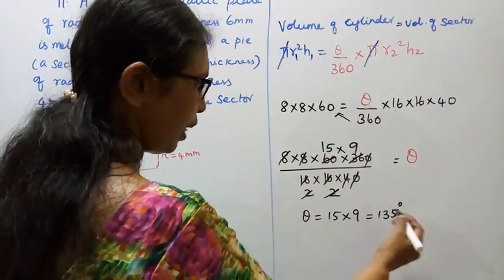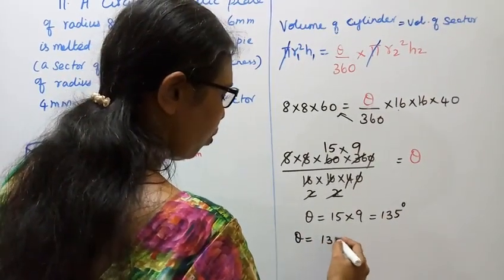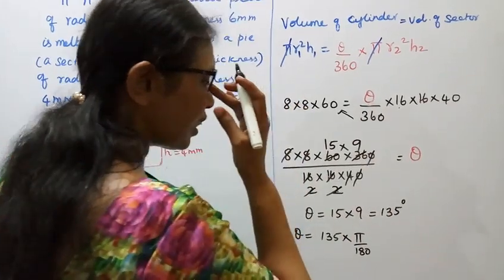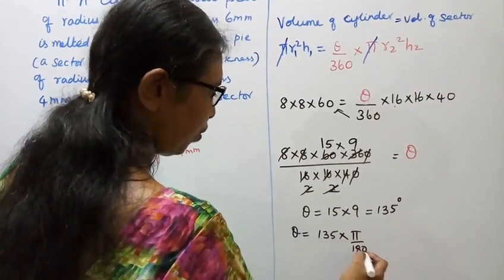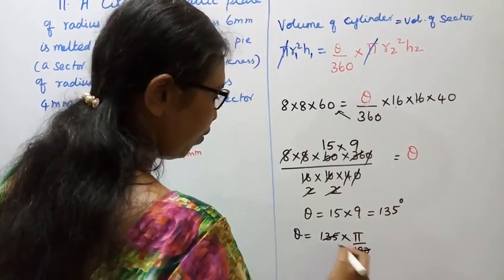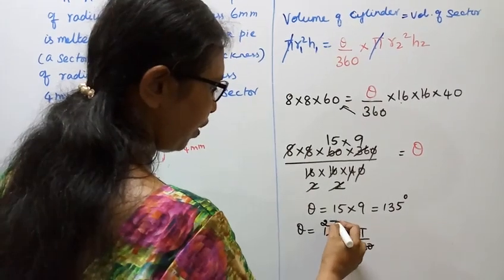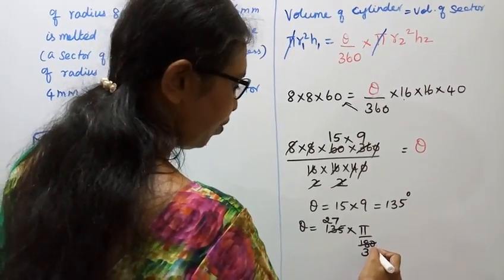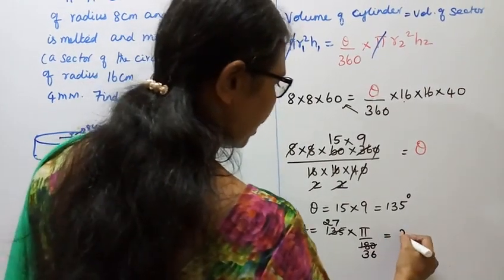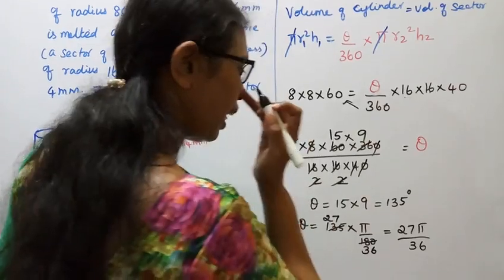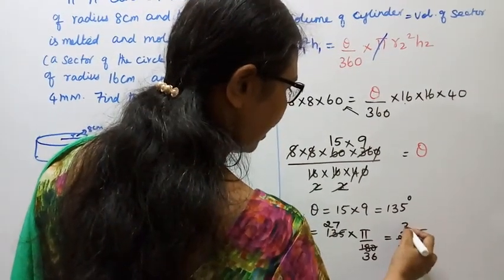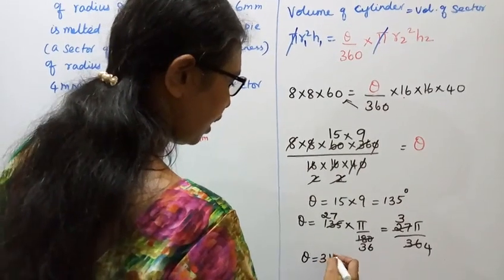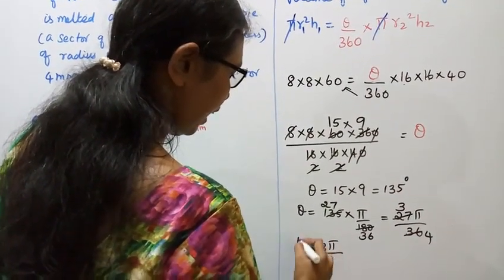That is equal to 135 times pi by 180 in radians. 135 and 180 cancel. 5 times 3 is 15, balance 30, 5 times 6 is 30, gives 5 by 36. 9 times 4 is 36, so theta equals 3 pi by 4. Answer.